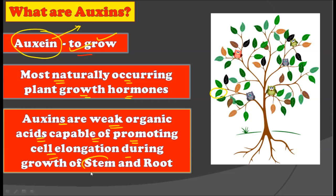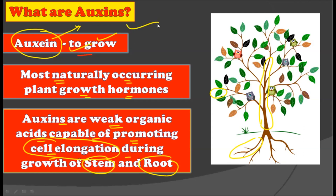Auxins are chemically weak organic acids which are capable of promoting cell elongation during the growth of stem and root. The primary function of auxin is to elongate the cell, and that is why they help in the longitudinal growth of roots as well as the stem — increasing the length of both stem and root.